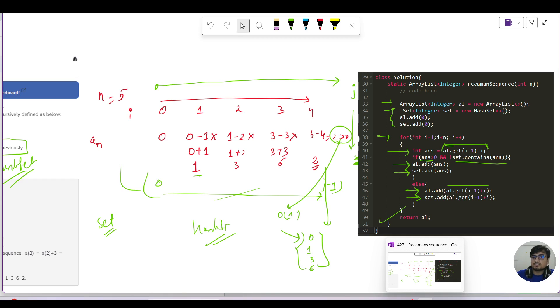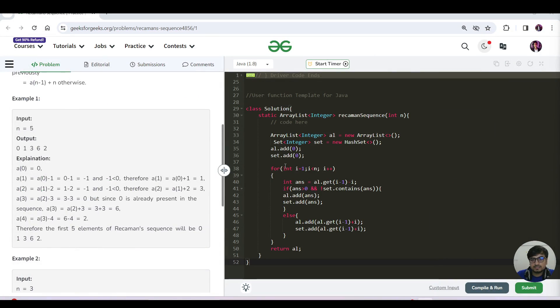Yeah, that's it. So what would be the time and space complexity? The time would be O(n) and space would be again O(n) because you're using a hash set. Great.